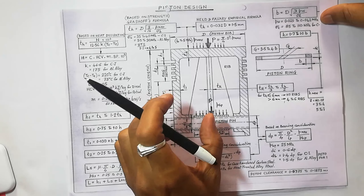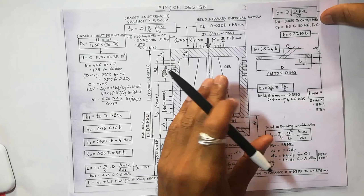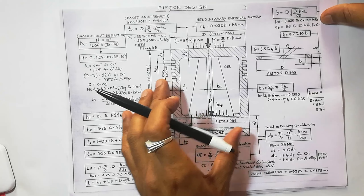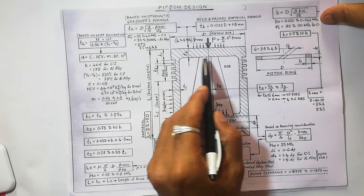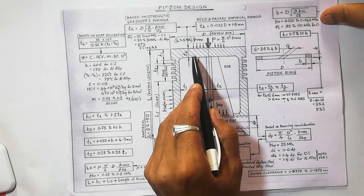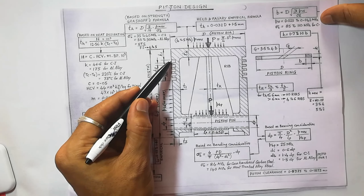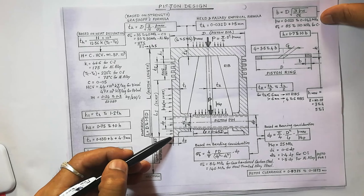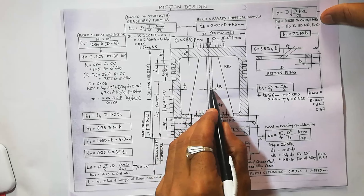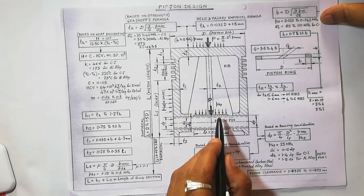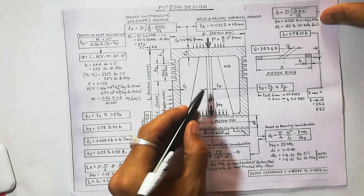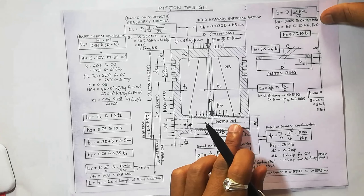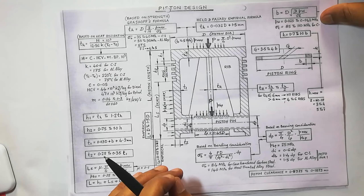The piston is called the heart of the IC engine — it reciprocates in the cylinder. The important parts of the piston are: at the top, the thickness of the piston head; below that, the ring section; below the ring section, the skirt section. At the middle of the piston is the piston pin, where the connecting rod is connected.